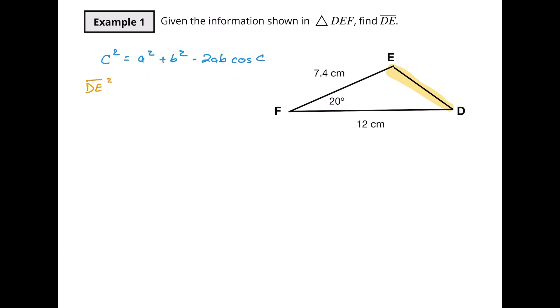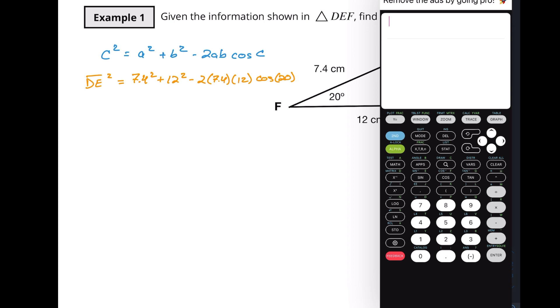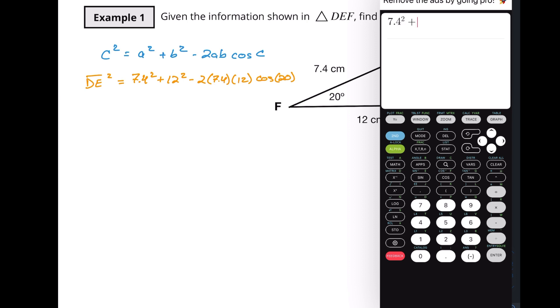But what I know is my two sides and my included angle are all going to line up. So DE squared equals 7.4 squared plus 12 squared minus 2 times 7.4 times 12 times cosine of 20 degrees. Let's grab our calculator and drop all of this in. I don't need to calculate all the little bits — the calculator lets me do the whole thing: 7.4 squared plus 12 squared minus 2 times 7.4 times 12 times cosine of 20.